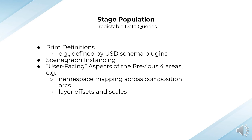Finally, the stage population area of the core specification will be a normative description of the behaviors required to populate the composed scene graph to comply with predictable data queries for all composed prims, properties, and metadata. This includes the population of prim definitions such as those defined by USD schema plugins, and many user-facing aspects of the previous four areas, such as namespace mapping across composition arcs, as well as layer offsets and scales.